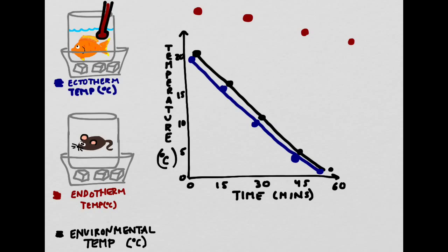However, if we were to replicate the same experience with a mouse, one thing that we would notice is that the mouse, first of all, has a higher starting temperature, and that it would also not decrease that much even though the environment got a lot colder.